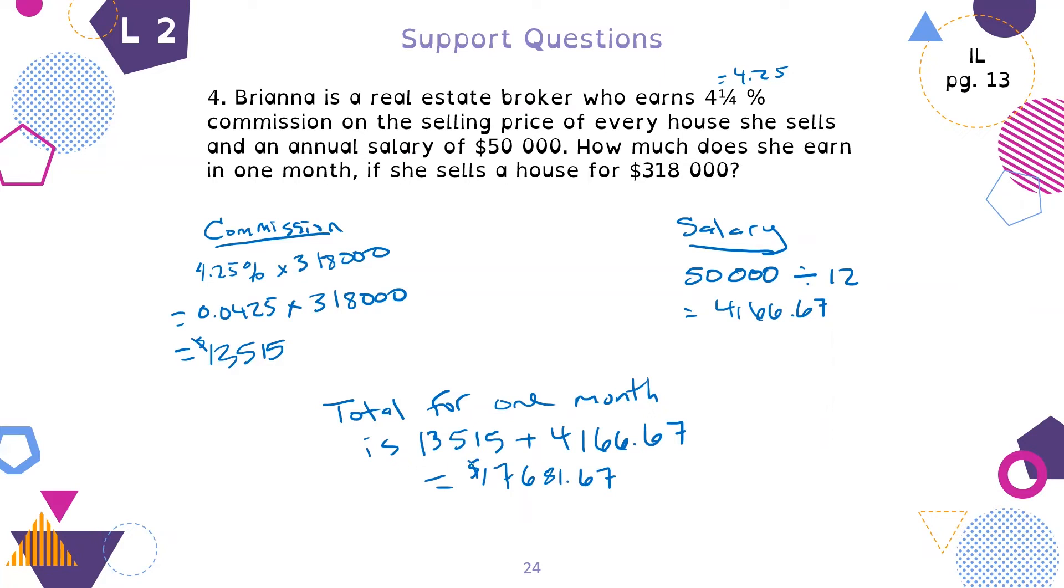So the total for one month is $13,515 plus $4,166.67, which equals $17,681.67. That's how much she would make this month because it's commission. We can't guarantee that's going to be every month because it depends on how much she sells. Sometimes it might be really great, sometimes it might not be so good.